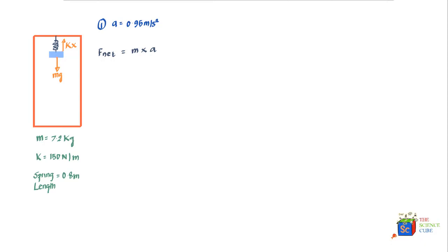Before proceeding, let's set the sign convention: any vector pointing upward is positive and any vector pointing downward is negative. With these rules, the net force equation becomes: kx (upward, positive) minus mg (downward, negative) equals mass times acceleration of the elevator, which is also the acceleration of the mass.